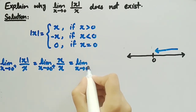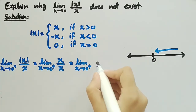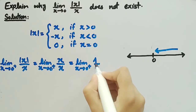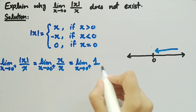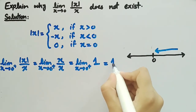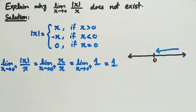So it becomes limit as x approaches 0 from the right of x divided by x, which equals the limit of 1. Since 1 is a constant, when we apply the limit it will be equal to 1.